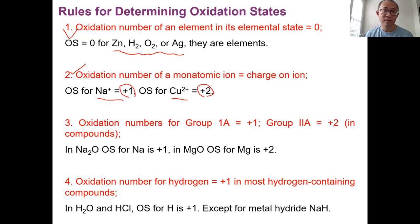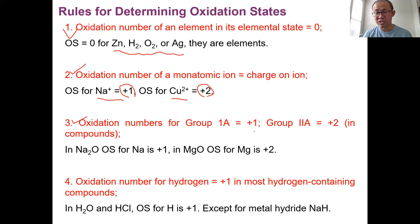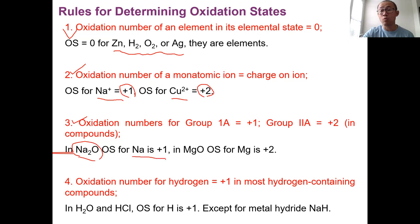Rule number three: the oxidation number for a Group 1A metal in a compound is +1. Group 1A metals include lithium, sodium, potassium, rubidium, cesium — these alkali metals. Their oxidation number is +1 in a compound. For example, in sodium oxide, the oxidation number for sodium is +1 because it is a compound and sodium is a Group 1A metal.